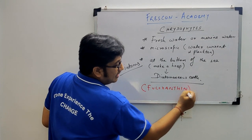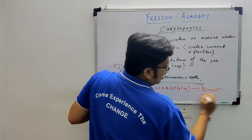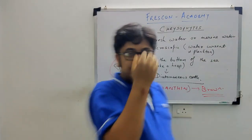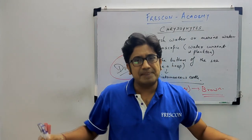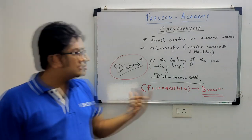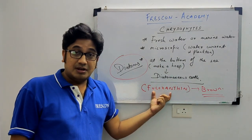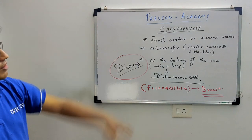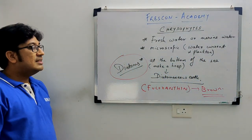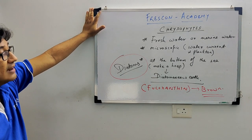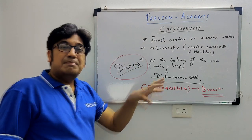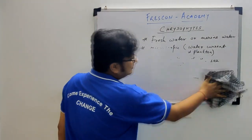These organisms that form diatomaceous earth are called diatoms, and they are examples of Chrysophytes. They have a pigment called phucoxanthin, which gives them a brownish color. So diatoms look a little brownish because of the pigment phucoxanthin. Their habitat is both fresh water and marine water, they are microscopic, and they form diatomaceous earth.